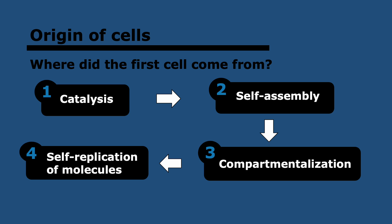These are the four steps that must have happened for cells to arise. First, catalysis — the control of chemical reactions, having control over which reactions occur, because otherwise it would be chaotic with no organization whatsoever. Second, self-assembly, which means compounds joining together to form larger compounds — DNA is an example, being the assembly of nucleotides. Third, compartmentalization: the cell must have had a membrane develop to enclose it, because otherwise it wouldn't be a cell. Fourth, the self-replication of molecules — the ability to replicate molecules such as DNA to pass on genetic material and create more cells.